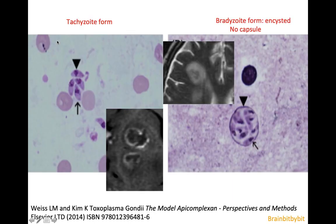There are different forms of the parasite. There is the tachyzoite form, when it is free, and then it can replicate quickly — hence the name tachy, meaning quick. The tachyzoite form represents the active parasites, and they correspond to the enhancing rim that you see on imaging.